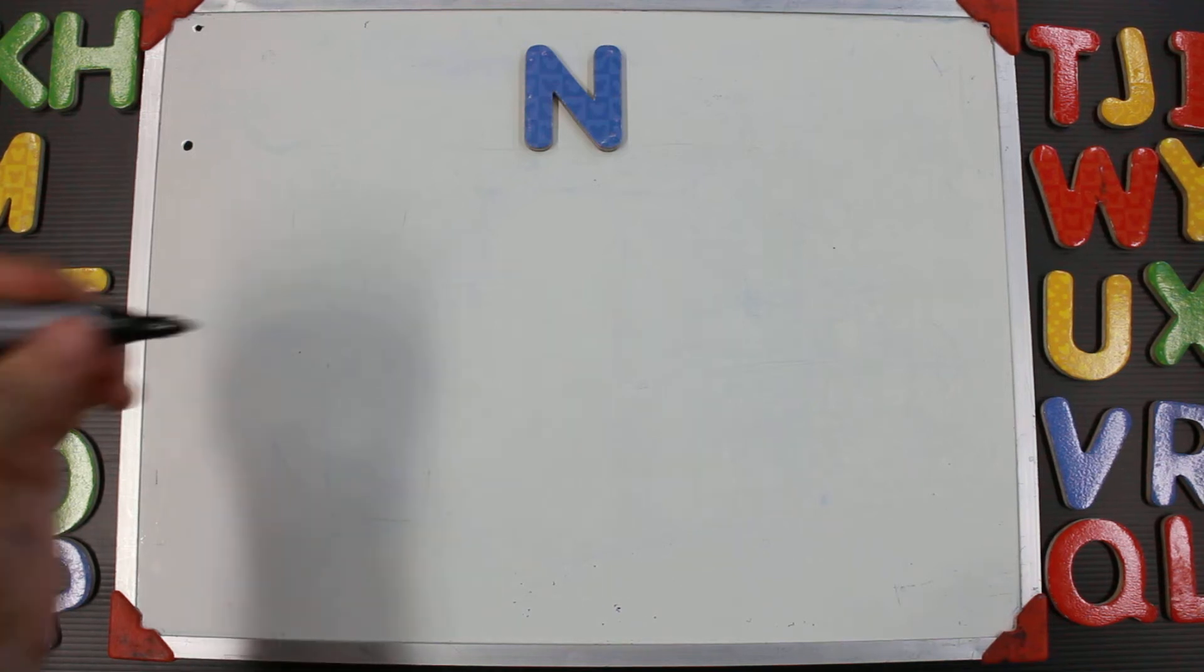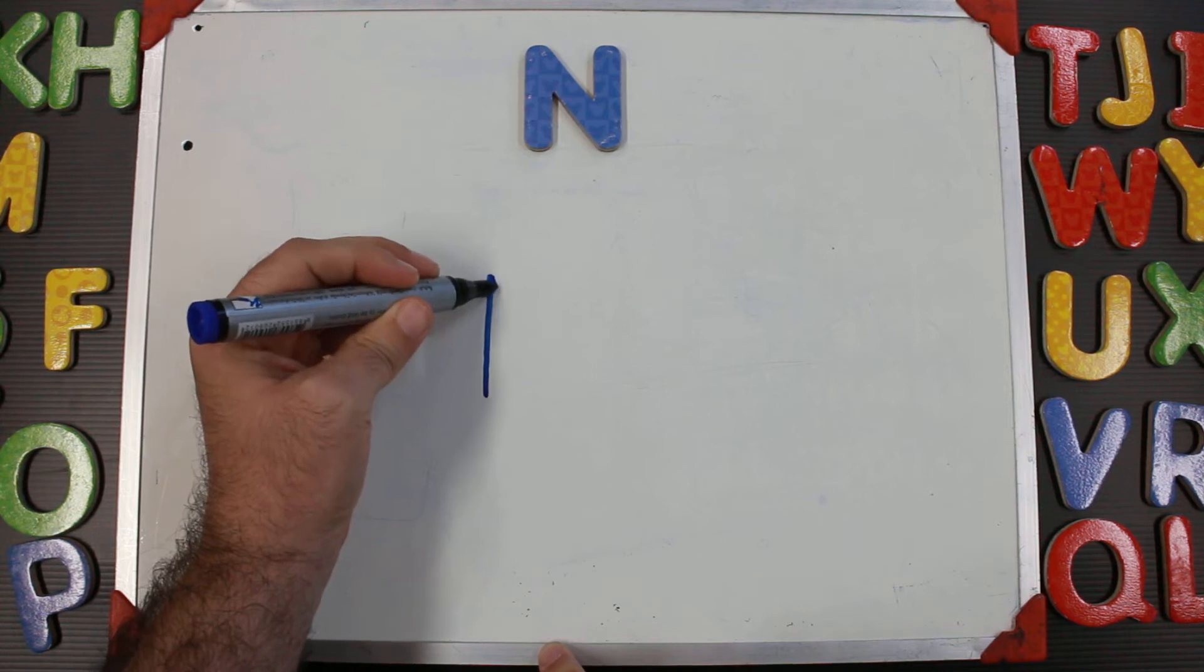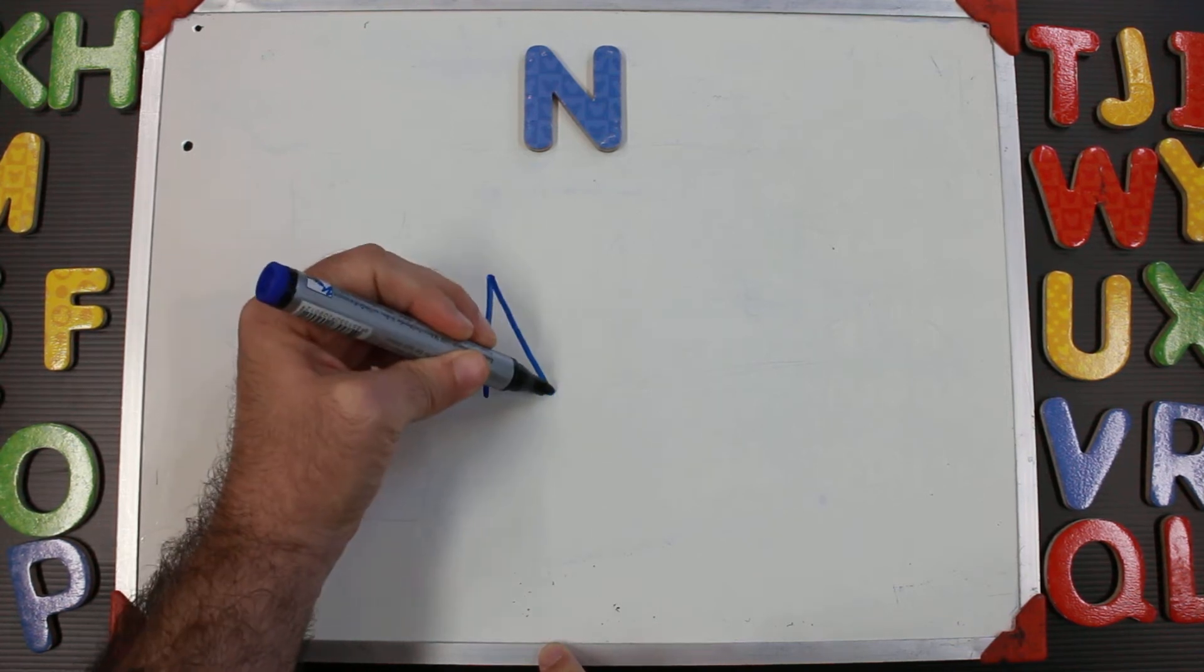Let's work on our letter N. To start, we will make a line that goes up, then a line that goes down to the bottom, and then a line that goes up.